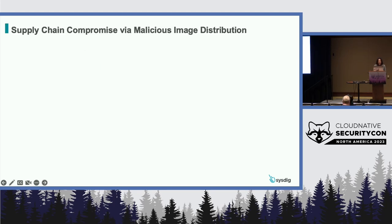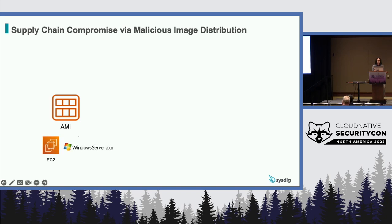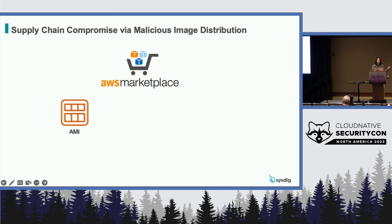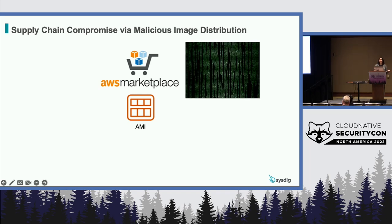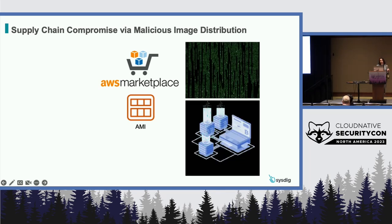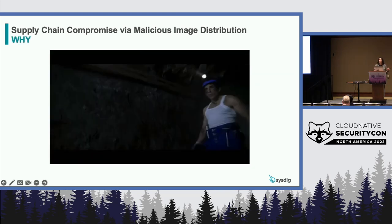This attack happened in 2020, and it started with an attacker utilizing an Amazon Machine Image, or AMI — basically a prepackaged EC2 instance. In this case, it was a Windows 2008 Server instance. The attacker took the AMI and put it into the AWS Marketplace, which is a very public well indeed. Any time somebody happened to use this image, a script would run in the background that would execute crypto miners.